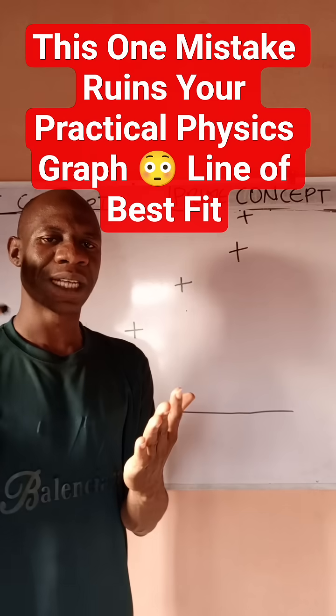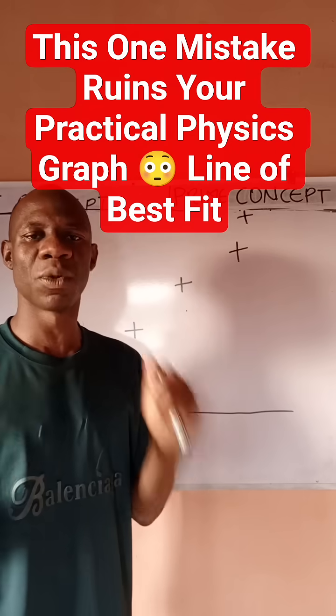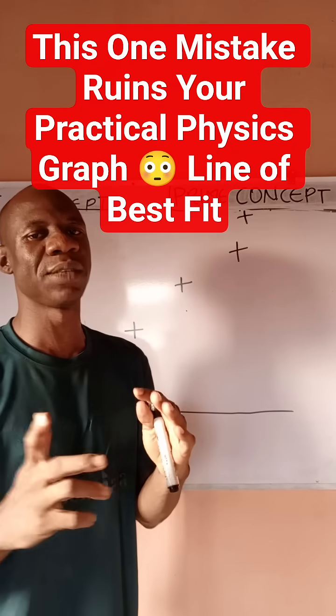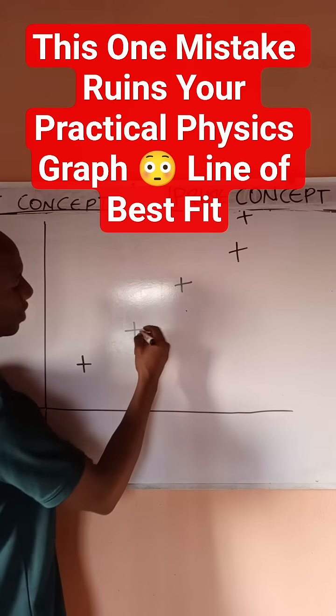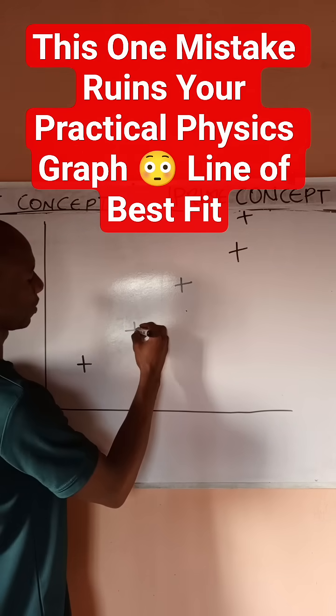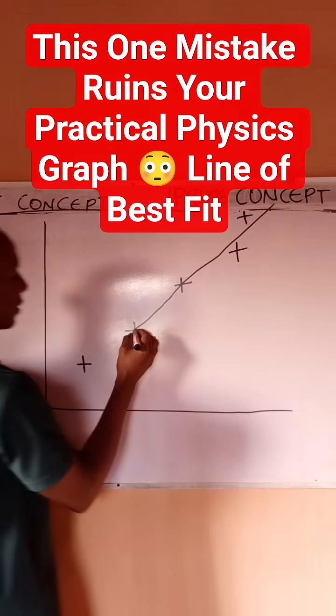fit is a line that touches as many points as possible, leaving the unaccommodated points evenly distributed. So I'm going to draw. Let's try to do freehand because I don't have a meter rule. If I use a meter rule, I'll draw like this.